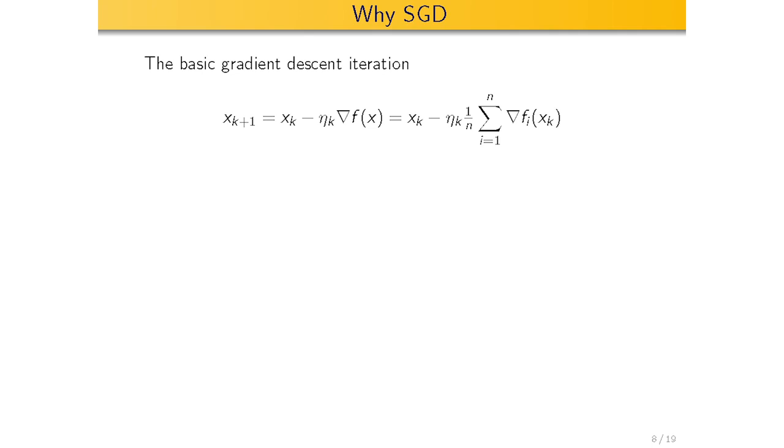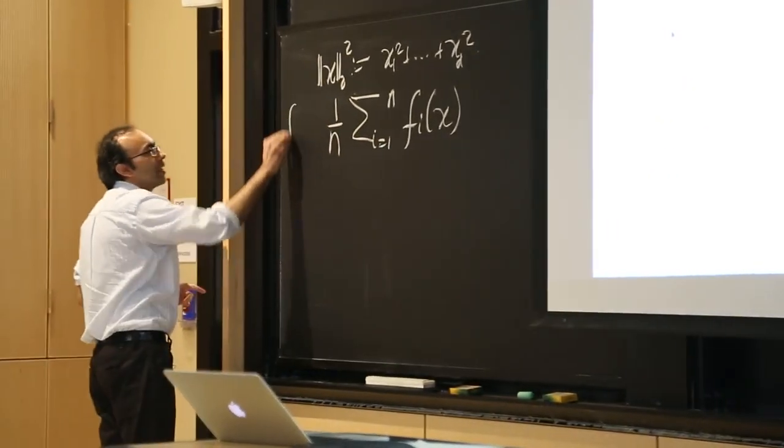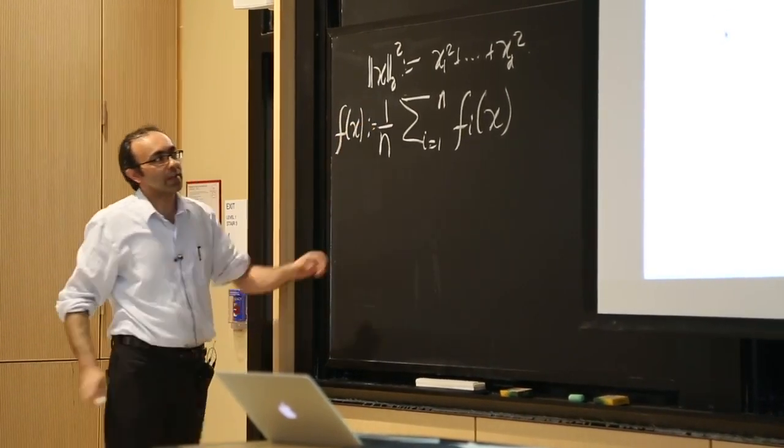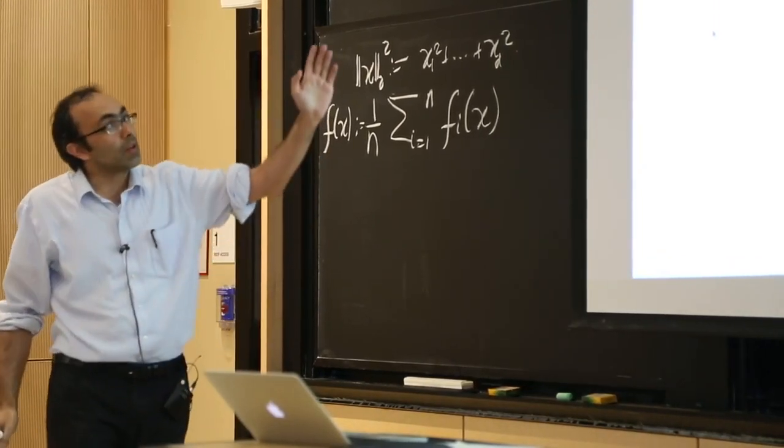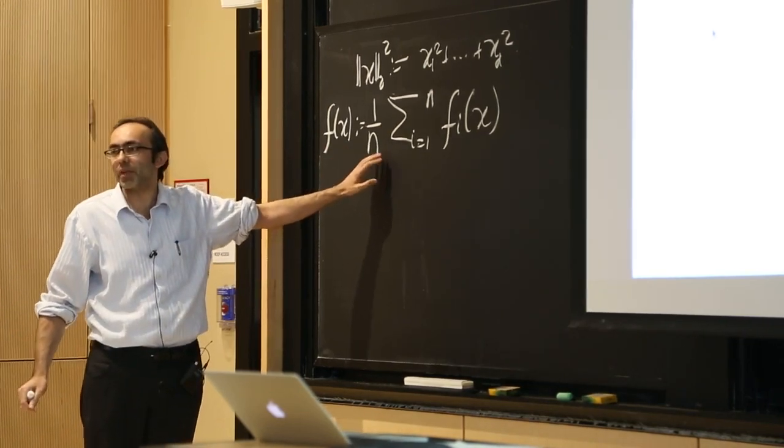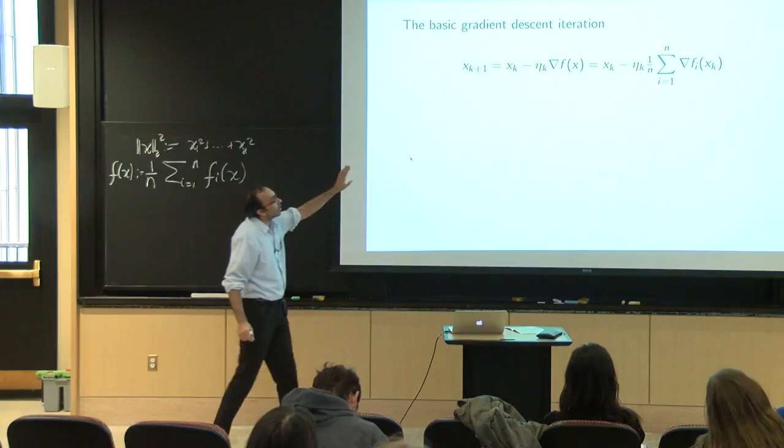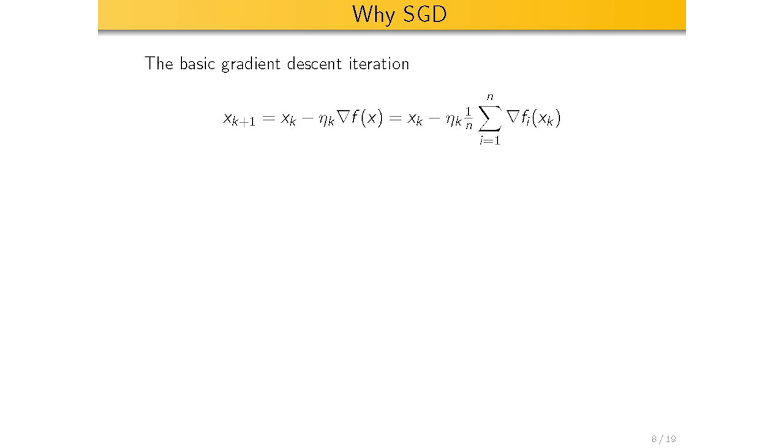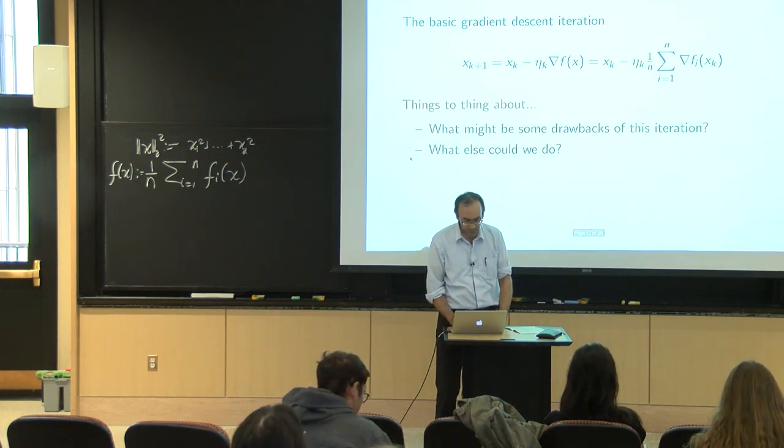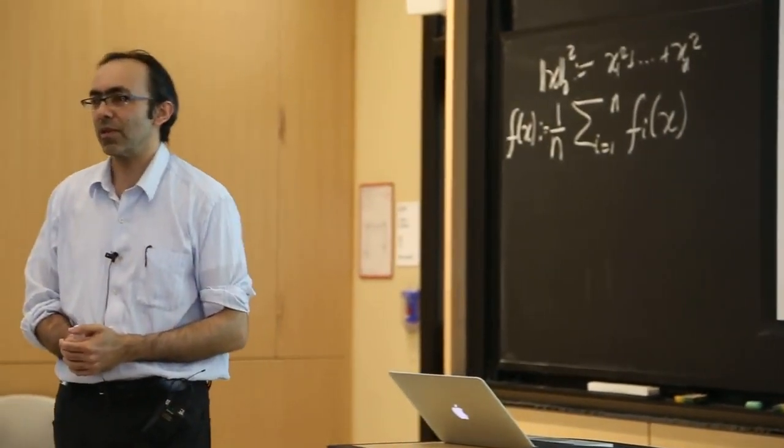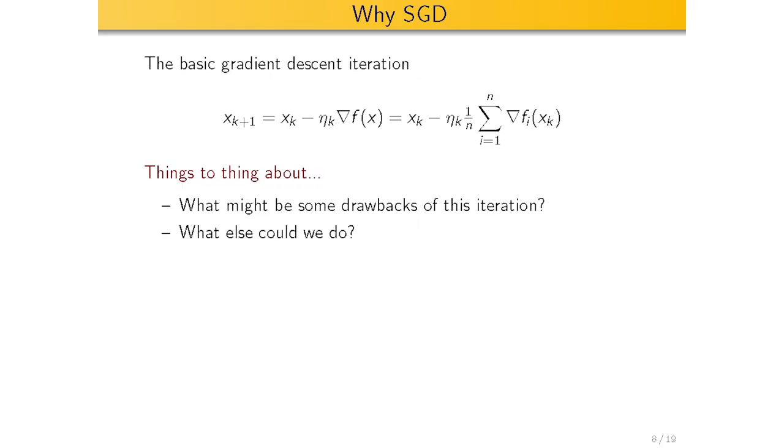Hopefully this iteration is familiar to you, gradient descent. If you were to try to minimize this cost function - neural network, SVM, whatever - using gradient descent, that's what one iteration would look like. Because it's a finite sum, gradient of the sum is the sum of the gradients. What may you not like about this iteration given that big N, big D story?